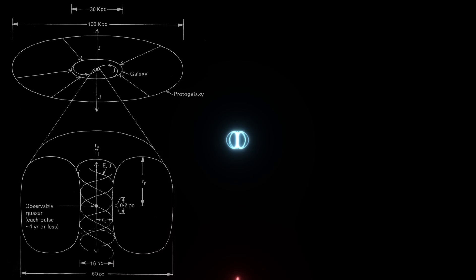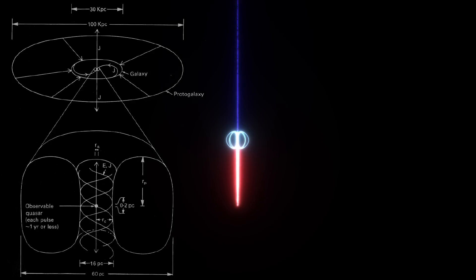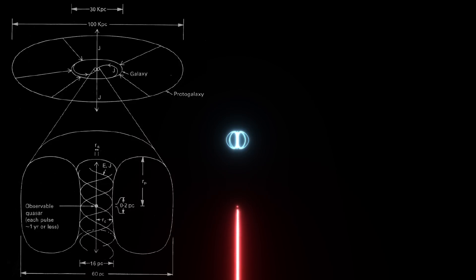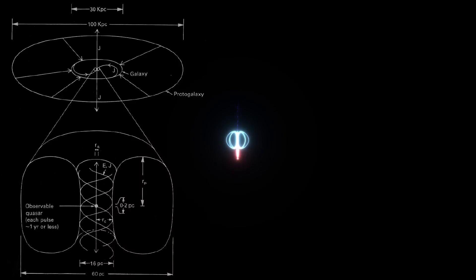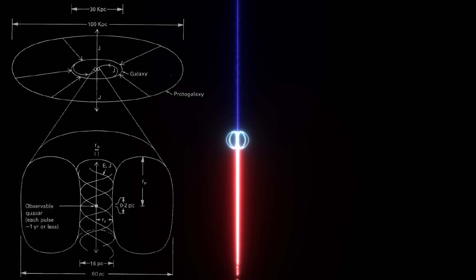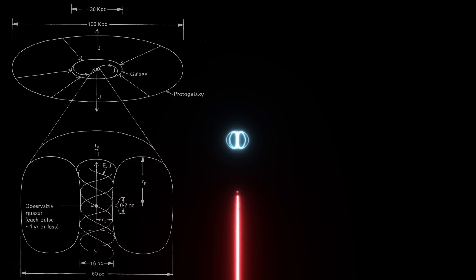Lerner discusses that the initial formation stage of the quasar would take a few hundred million years, compressing an area of tens of thousands of parsecs into a plasmoid with a radius of about 10 parsecs. Once the plasmoid is formed, the second stage involves the plasmoid slowly decaying. During this process, it releases its total power through the pulsing of the beams, with each pulse lasting about a year. The decay process would span several hundred thousand years.